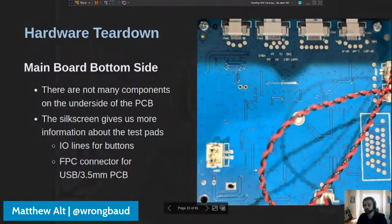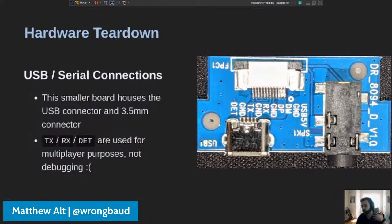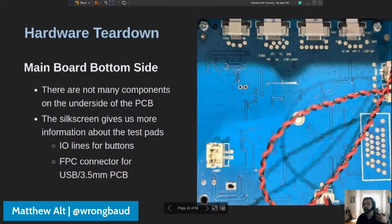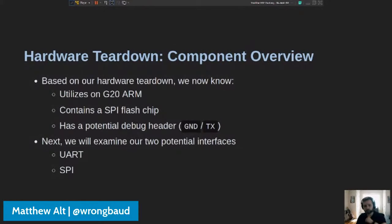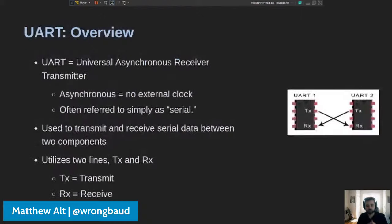Looking at the underside of the PCB, there's not much — we have some labels on test pads that match up with what we saw on the previous PCB: RX, TX, ground, detect. Nothing really enlightening here — no additional components, debug headers, or silkscreen labels that are very useful. From our quick hardware teardown, we know it's got a G20 ARM SoC, a SPI flash chip, and a potential debug header. So we're going to focus on these two interfaces: UART and SPI.